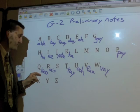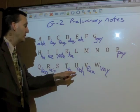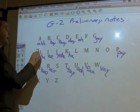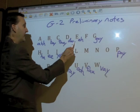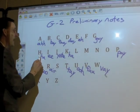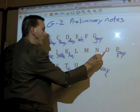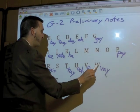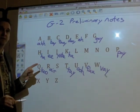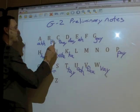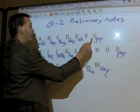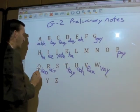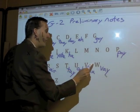Again on this line: ku, er, s, tay, ooh, fowl, v. Now let's try from the beginning: ah, b, tse, d, ae, f, g, ha, ee, yote, ka, l, m, n, o, p. Q, er, s, tay, ooh, fowl, v. And again a little faster: ah, b, tse, d, ae, f, g, ha, ee, yote, ka, l, m, n, o, p. Q, er, s, tay, ooh, fowl, v.